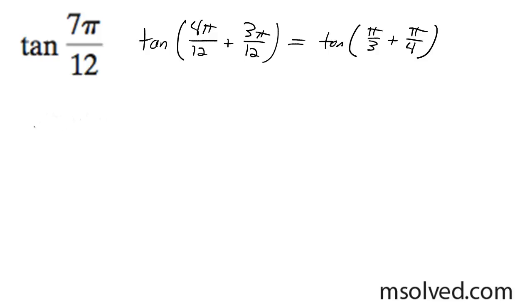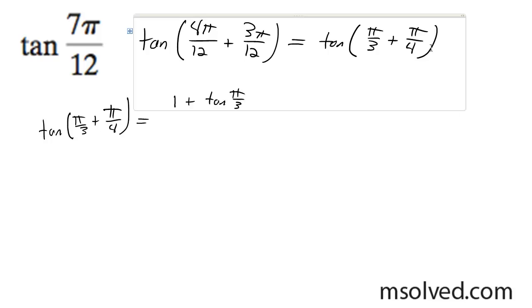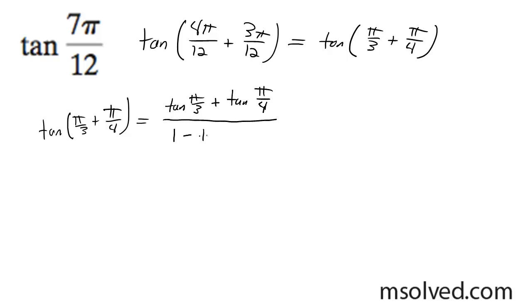We're going to use the trig formula identity. In this case, tangent of π/3 + π/4 equals tangent of π/3 + tangent of π/4, all over 1 - tangent of π/3 times tangent of π/4.